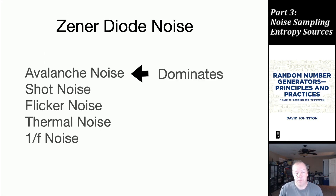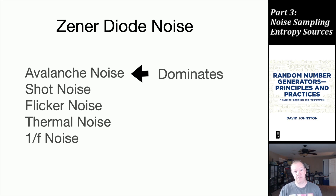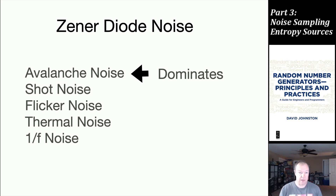Now we're going to look at zener diode noise. Zener diodes have traditionally been used for noise sources. When you look at the electrical characteristics and noise of zener diodes, there are several types: avalanche noise, shot noise, flicker noise, thermal noise, and 1/f noise. When you reverse-bias a zener diode to avalanche breakdown — where it carries current in the reverse direction past its breakdown voltage — the noise from avalanche breakdown actually dominates, and it's quite a nice white noise, not heavily shaped in frequency.